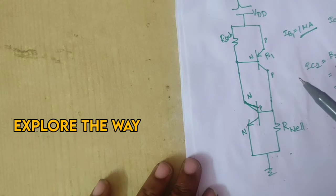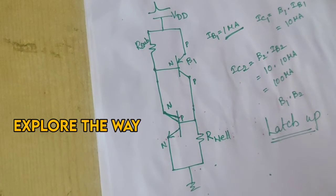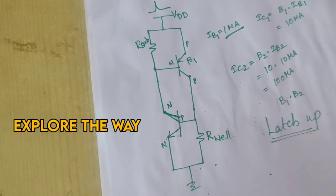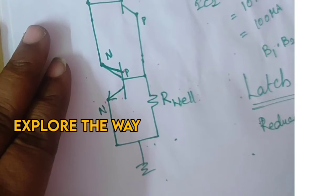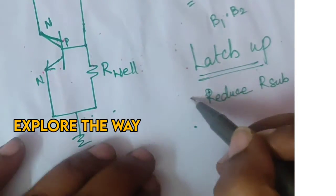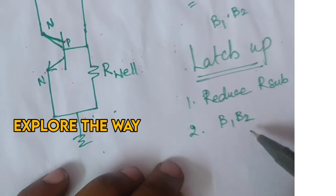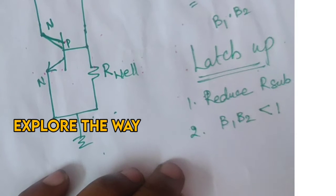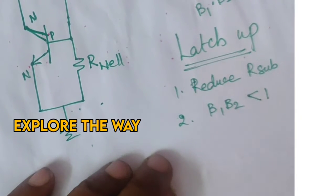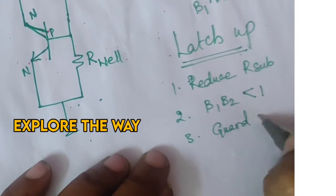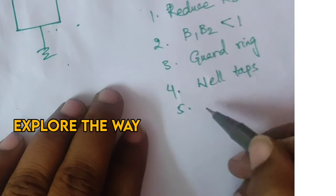We always need to protect CMOS circuits from this condition. In order to protect the CMOS device from latch-up, a number of techniques can be used. One technique is to reduce the substrate resistance. Another is to maintain the product of the gain factors of the two transistors — beta1 times beta2 — at less than unity. Other techniques include using a guard ring, well taps, and isolation trenches.